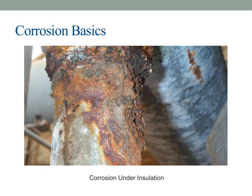Now, let's focus on corrosion under insulation. This is a critical area because insulation often covers piping and equipment, making it harder to detect issues early. When corrosion occurs beneath insulation, it can develop unnoticed, leading to significant damage before it's even visible. This type of corrosion is particularly insidious because the insulation provides a protective barrier that traps moisture and creates a humid environment, which accelerates the corrosion process.